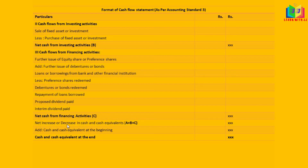The sum A plus B plus C gives us the net increase or decrease in cash and cash equivalents. If positive, it is a net increase; if negative, it is a net decrease. We then add the opening balance of cash and bank to this figure to arrive at the closing balance of cash and cash equivalents.